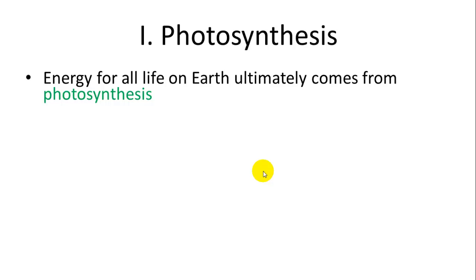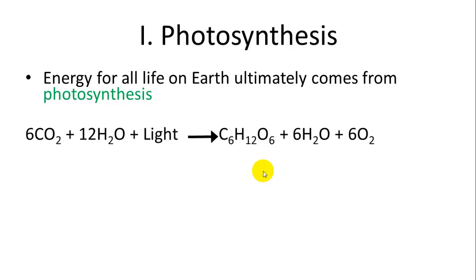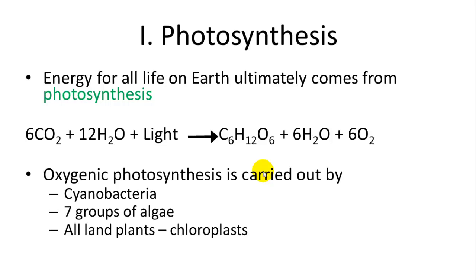The equation for photosynthesis is: we take carbon dioxide, combine it with water and light energy, to make sugar molecules C6H12O6, with byproducts of water and oxygen. There are different types of photosynthesis.